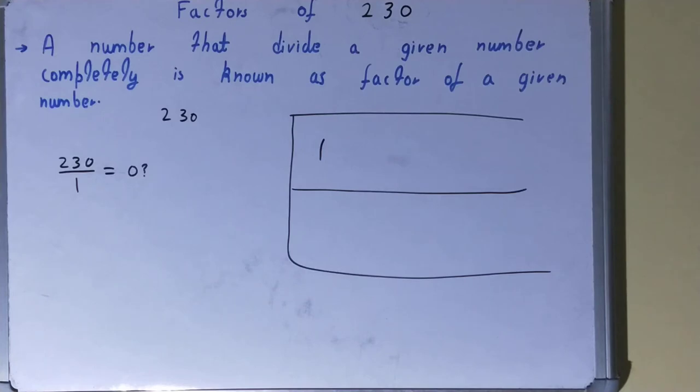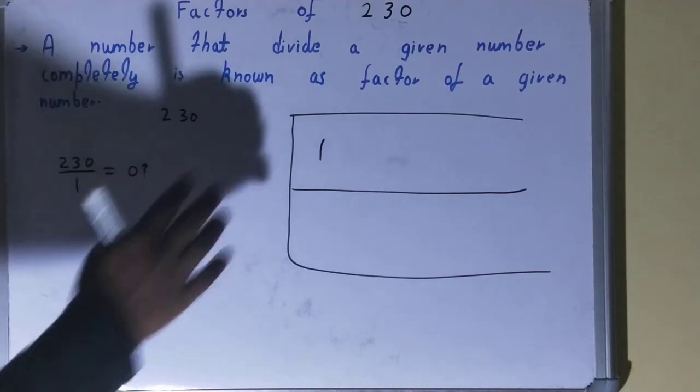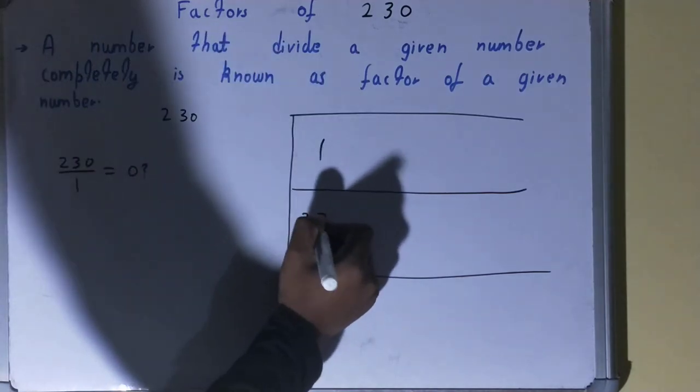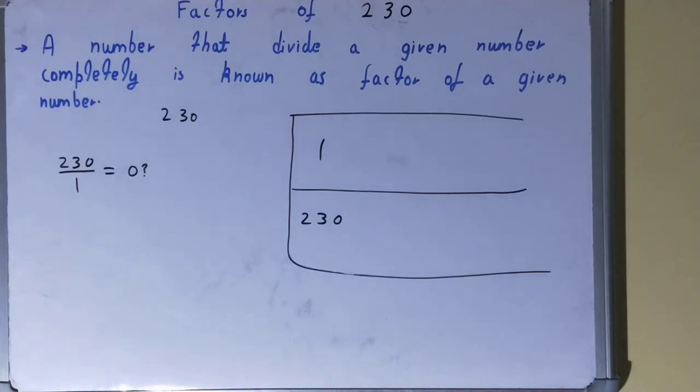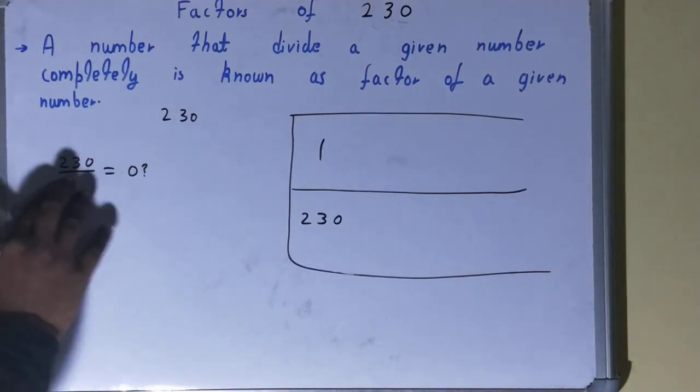with the help of this 1, we can find out another factor. How? 1 into what times is 230? 1 into 230 times. So 230 will also be the factor. After 1, we'll check with 2.